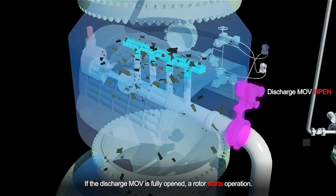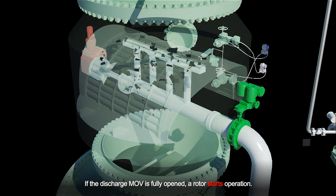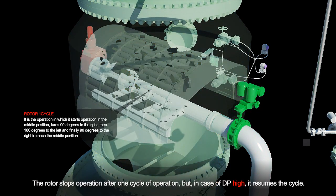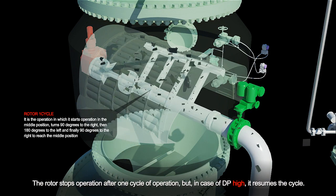The discharge MOV is fully opened. A rotor starts operation. The rotor stops operation after one cycle of operation, but in case of DP high, it resumes the cycle.